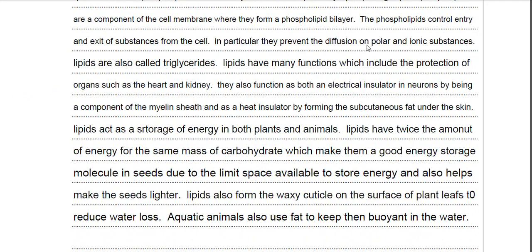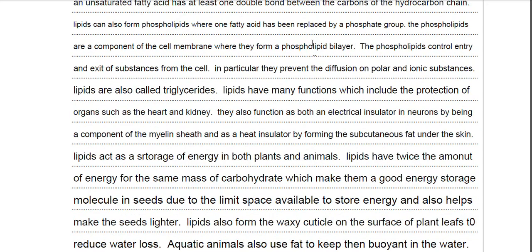Moving on, we have then the phospholipids. So I've talked about the structure of the phospholipids first, and I've told you that one fatty acid has been replaced by a phosphate group, and that then will give you a phospholipid. I've then said about its function, that it's a component of the cell membrane where they form a phospholipid bilayer. And for good measure I thought I mentioned that phospholipids control the entry and exit of substances from the cell. In particular they prevent diffusion of polar and ionic substances. And again just to try and get as many marks as possible I've then stated that lipids are also called triglycerides - triglycerides because you've got three fatty acids joined to each glycerol.